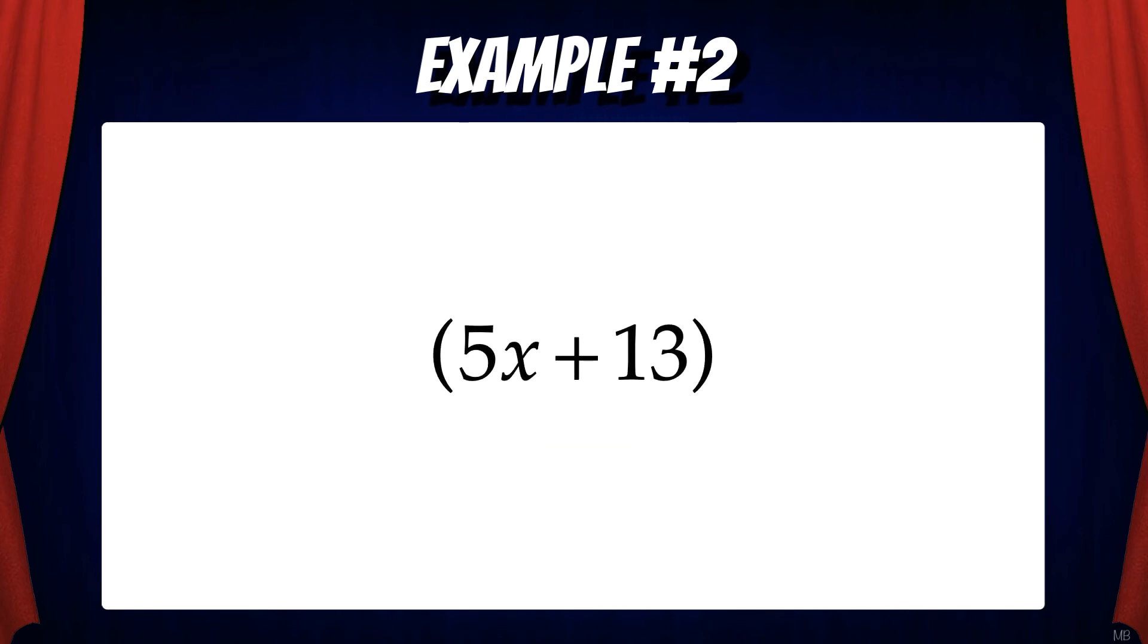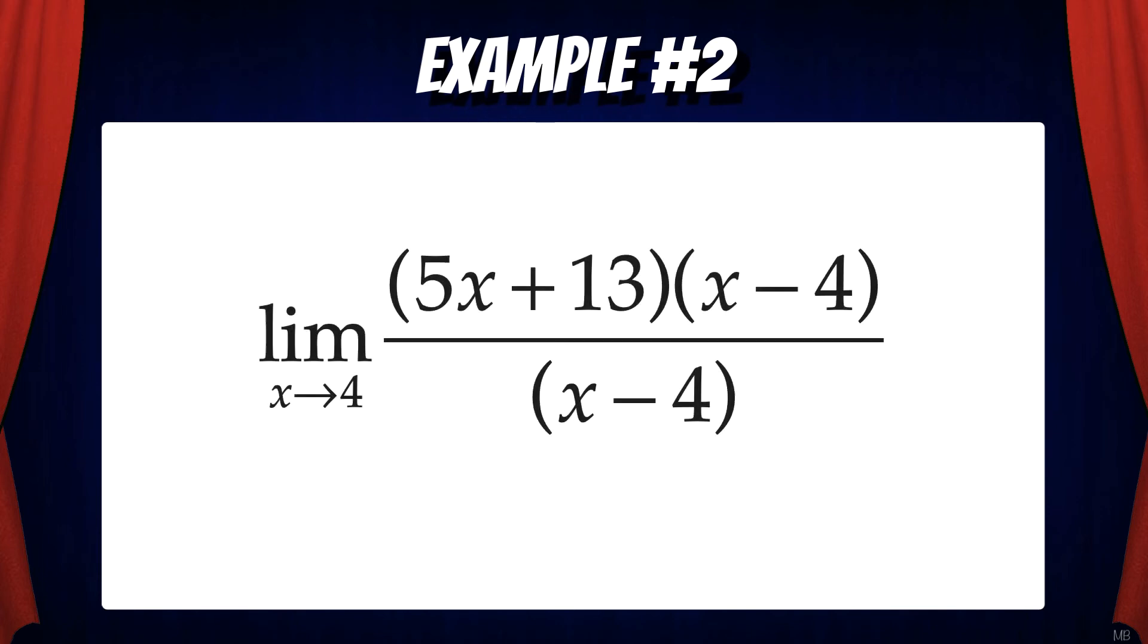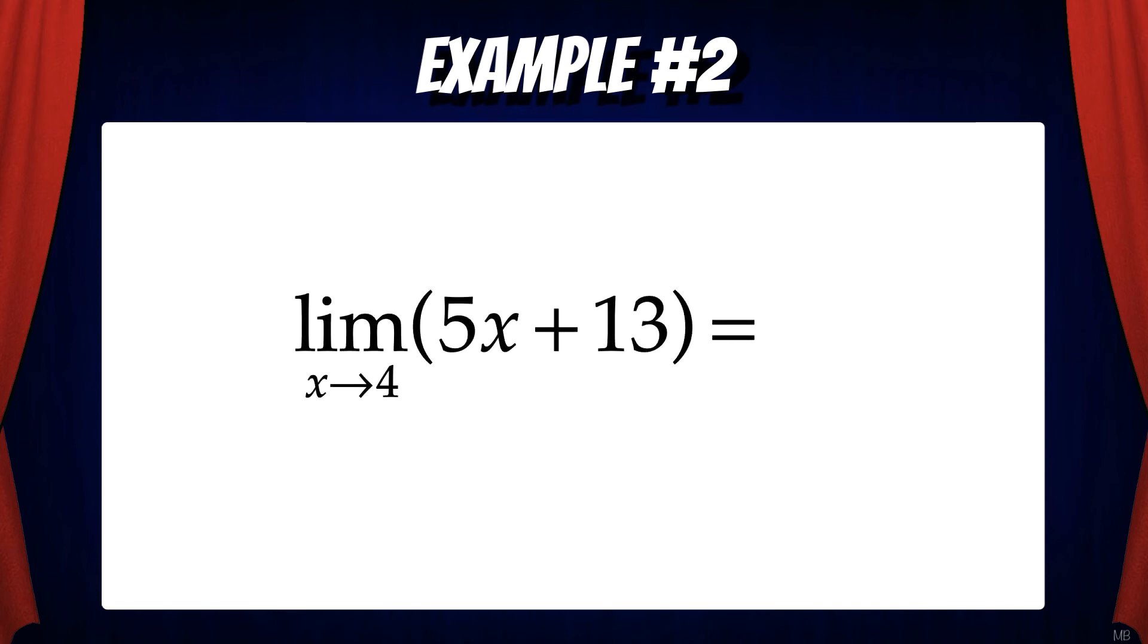Now we have the quotient 5x plus 13. So now let's go back to our limit problem with the factored numerator. We have the limit as x goes to 4 of 5x plus 13 times x minus 4 over x minus 4. And we can cancel out the x minus 4's. This leaves us with the limit as x goes to 4 of 5x plus 13. Now we can plug in 4 to the limit and get our solution. And our solution is 33.